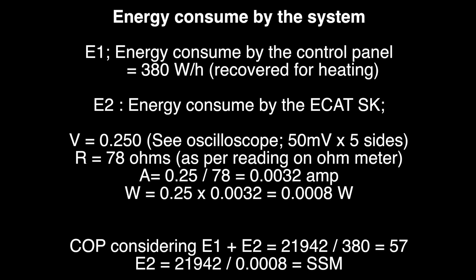However, if we consider that the 380 watts are recovered by the radiator of the control panel, and if we consider only the energy consumed by the ECAT, we have 21,942 watt hours per hour produced divided by 0.0008 watt hours per hour consumed. This means self-sustaining mode.